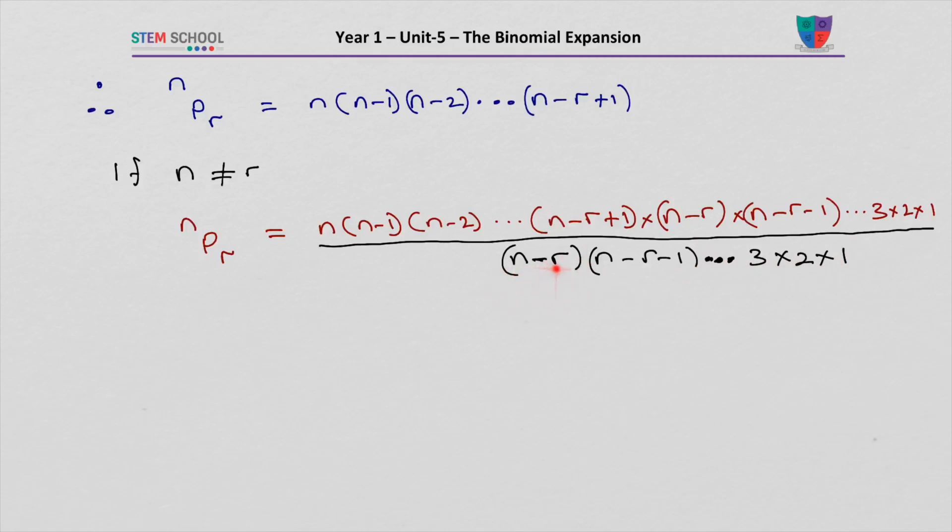This is n minus r times n minus r minus 1 times n minus r minus 2, all the way to 3 times 2 times 1. Therefore, n permutation r equals n factorial over n minus r factorial.